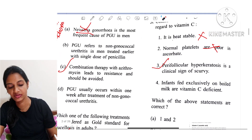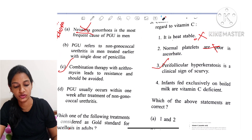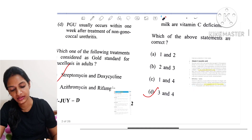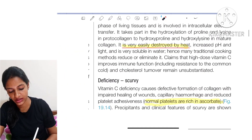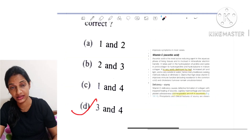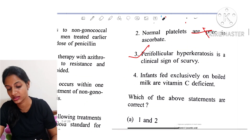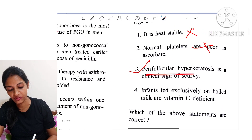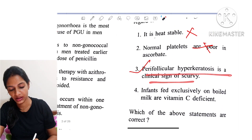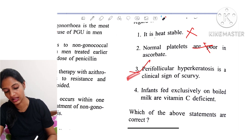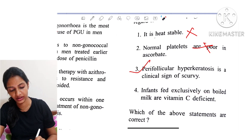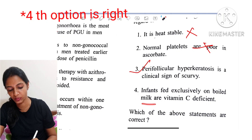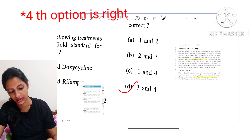Looking at the statements for Vitamin C: the first says it is heat stable — that is wrong, it is actually heat labile. The second says normal platelets are poor in ascorbic acid — that is also wrong, as we just noted that normal platelets are rich in ascorbic acid. Perifollicular hyperkeratosis and the clinical signs of scurvy — that is true.